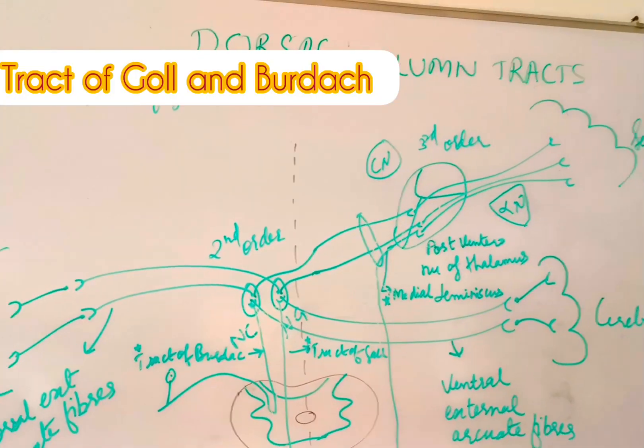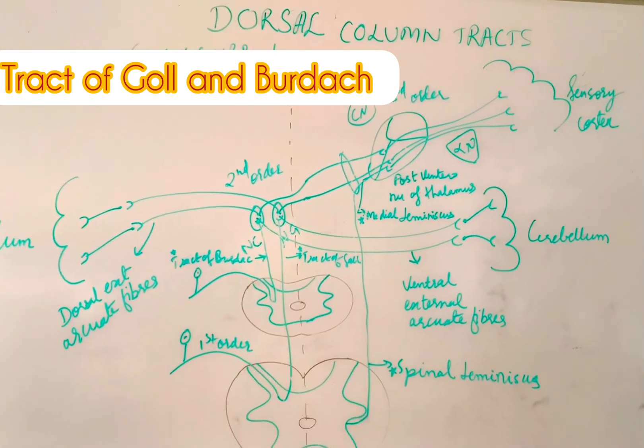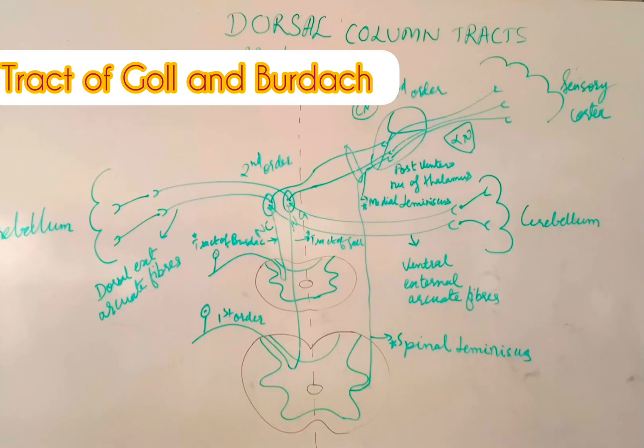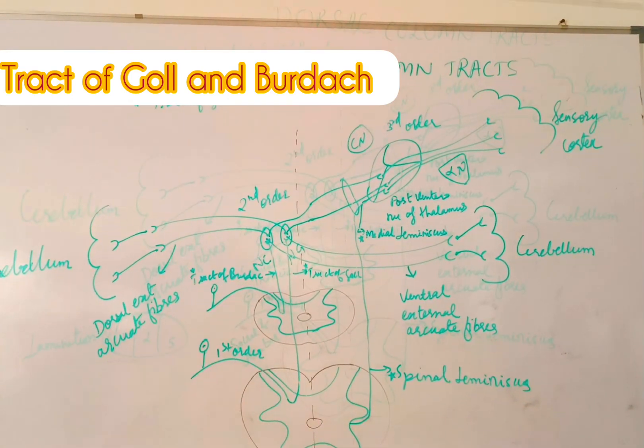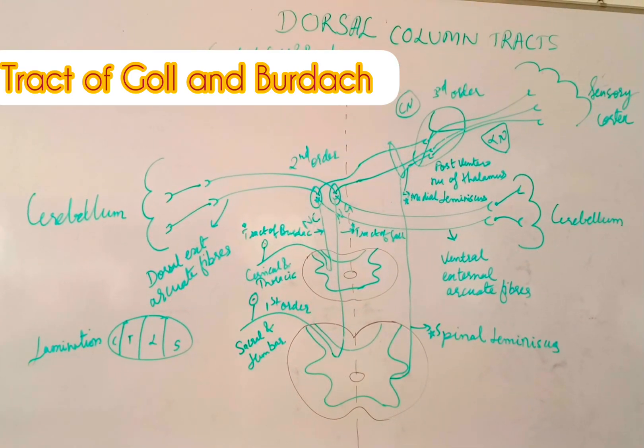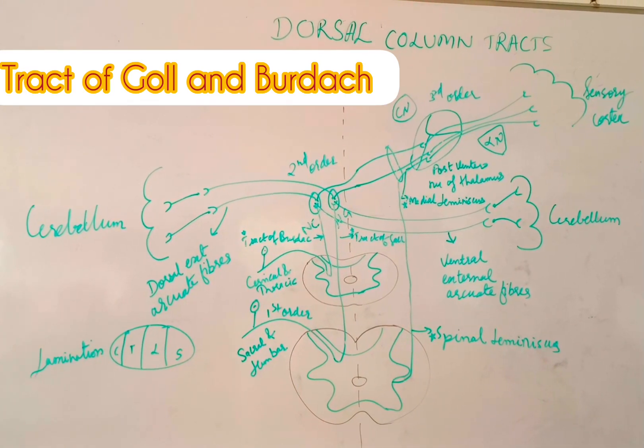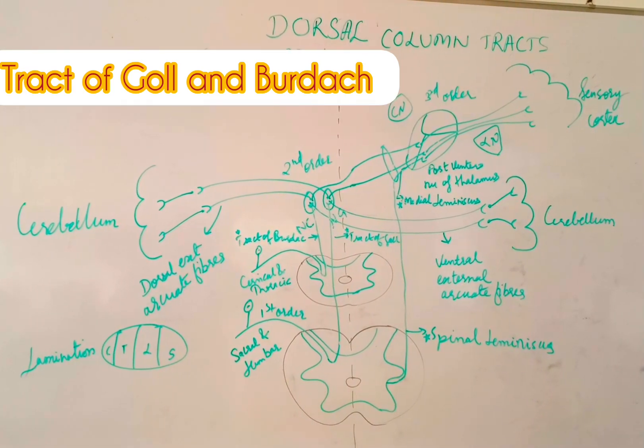So this is the whole depiction of dorsal column tracts. Now let us see what are the functions. They help in fine touch, vibration, proprioceptive impulses, kinesthetic sensation, stereognosis, topognosis, and two-point discrimination.